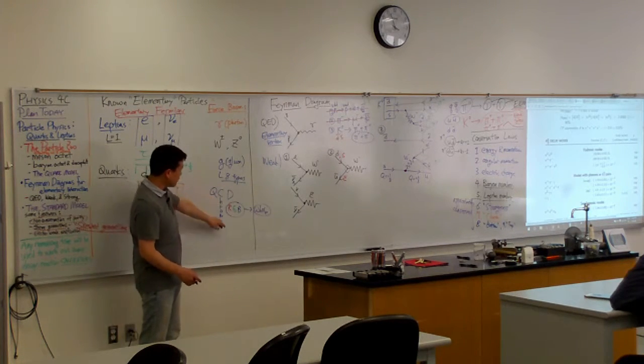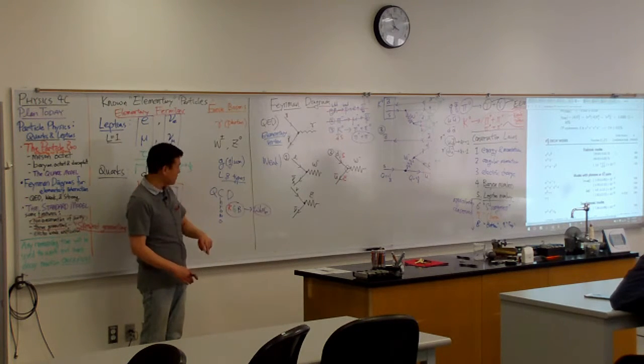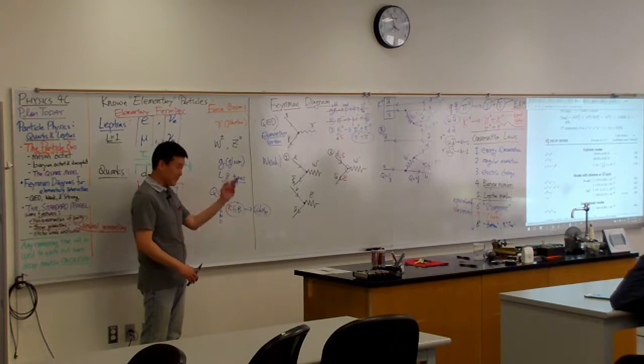With the strong interaction, there are three different kinds of charges. So there's red, there's anti-red, there's green, there's anti-green, there's blue, there's anti-blue.